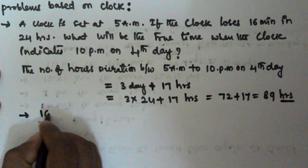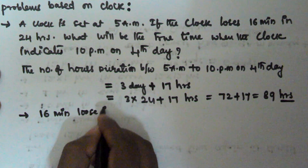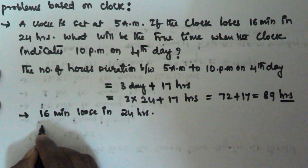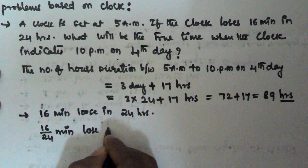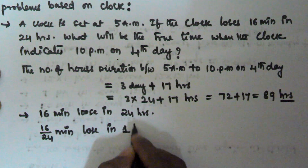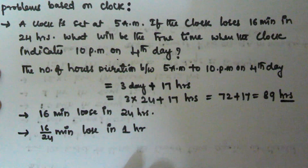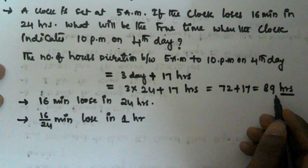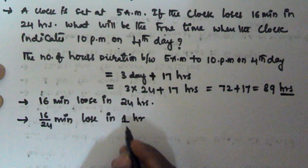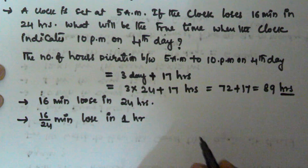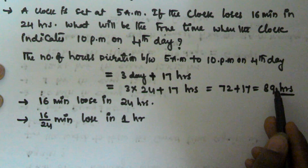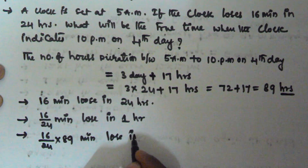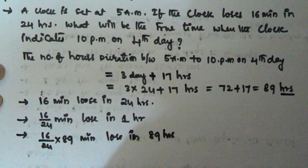It is given that the watch loses 16 minutes in 24 hours. So dividing, that is 16/24 minutes loss in 1 hour. Our total duration is 89 hours, so we multiply 16/24 by 89 to find the total number of minutes lost in 89 hours. That gives us 16/24 × 89 minutes loss in 89 hours.